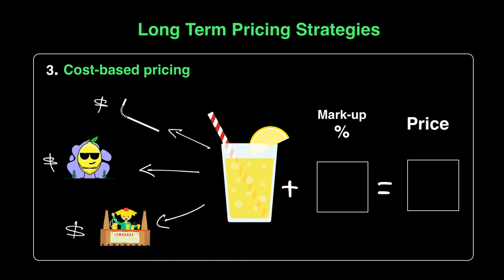Let's say it cost him $3 for a glass of lemonade in total to make. Now in order to make a profit, he has to make sure he sells it for more than $3. But the question is by how much? Too high and people won't buy it. Too low and you may not even cover your own costs. So in that situation, Mike will give himself a target profit — he'll tell himself he wants to make a certain amount of profit on each glass he sells.